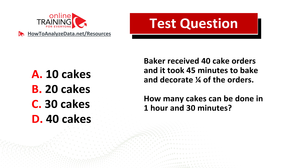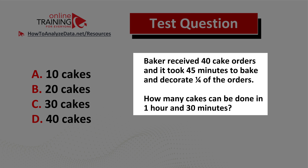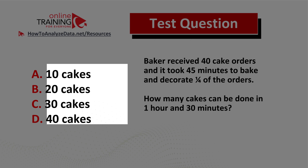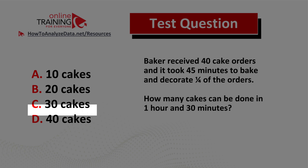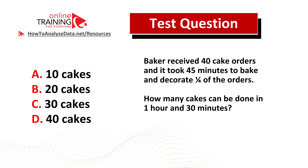Let me share with you an interesting question similar to the ones you see on the test. A baker received 40 cake orders and it took 45 minutes to bake and decorate one quarter of the orders. How many cakes can be done in one hour and 30 minutes? Choice A: 10 cakes. Choice B: 20 cakes. Choice C: 30 cakes. Choice D: 40 cakes. Do you think you know the answer? Now might be a good time to pause this video.